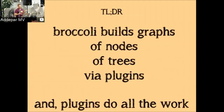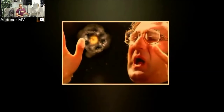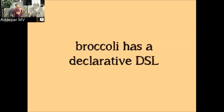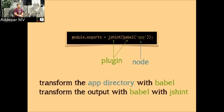The TL;DR of Broccoli: it builds graphs of nodes of trees via plugins. Broccoli is broken into two parts: a declarative DSL that runs before your build and describes what is going to happen, and then the plugins themselves executing on every subsequent build. In the tiniest Broccoli build pipeline: take all the files in the app directory, transform them from ES6 to ES5 using Babel, then take that output and JSHint it. The app directory is transformed by Babel, Babel's output is transformed by JSHint — that's the complete build pipeline.